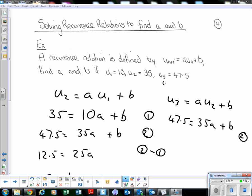In a similar fashion, we can look at what u_3 is in terms of u_2. So u_3 would equal a*u_2 + b. Substituting in, 47.5 = 35a + b.